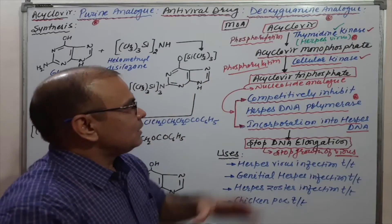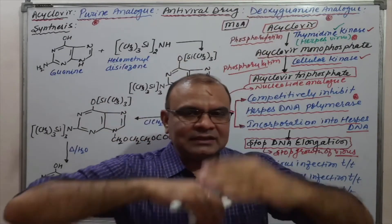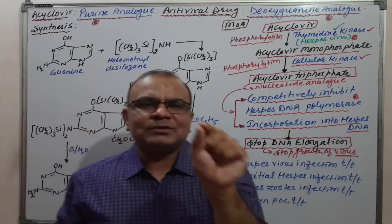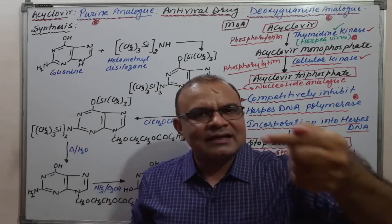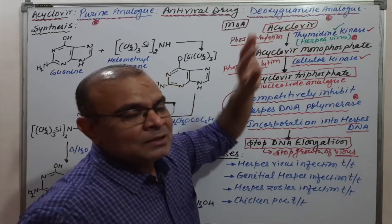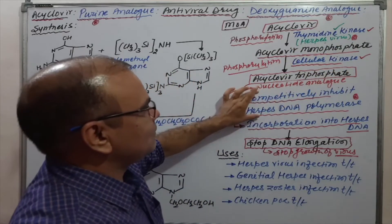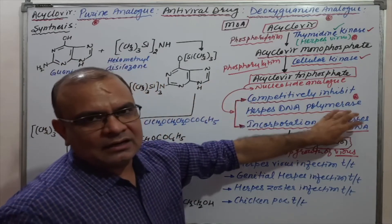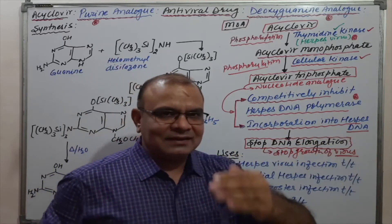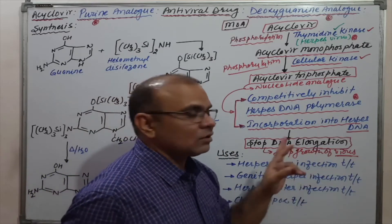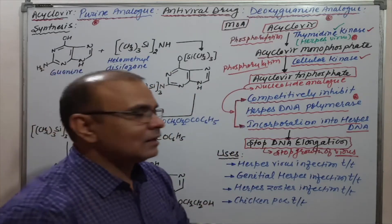Acyclovir uses the herpes virus enzyme because the herpes virus enzyme is not fully dedicated to herpes — it also acts on the drug. There is competitive inhibition of DNA polymerase and incorporation of the nucleotide analog into the herpes virus DNA, which results in the stop of DNA elongation and inhibition of virus growth.